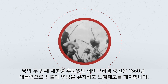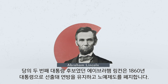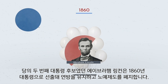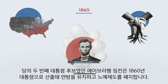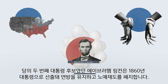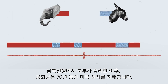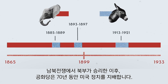The party's second-ever candidate for president, Abraham Lincoln, wins the presidency in 1860 and goes on to preserve the Union and abolish slavery. Following the North's win of the Civil War, the Republican Party dominates the nation's politics for the next 70 years.